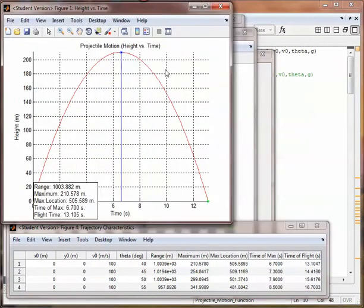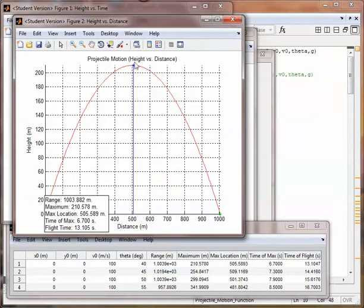The first figure being height versus time, showing the maximum and the flight time. The second figure is height versus distance, showing the range and the maximum height.